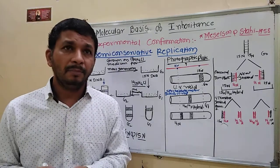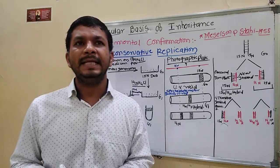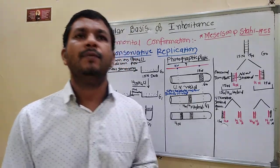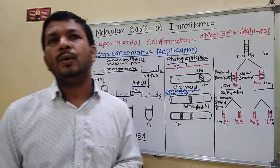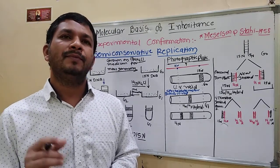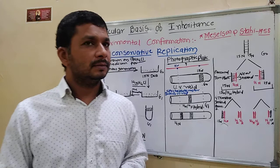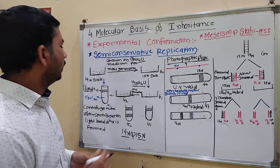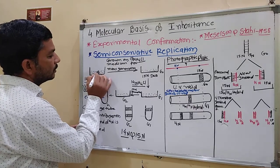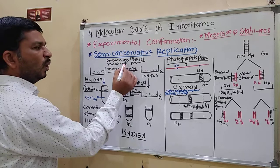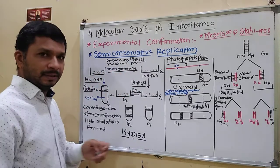Meselson and Stahl performed an experiment to show that DNA replication is semi-conservative. For that, they grew E. coli in a nitrogen medium containing 15N, the heavy type of nitrogen. After few generations, the bacteria grew on 15N NH4Cl medium for many generations.